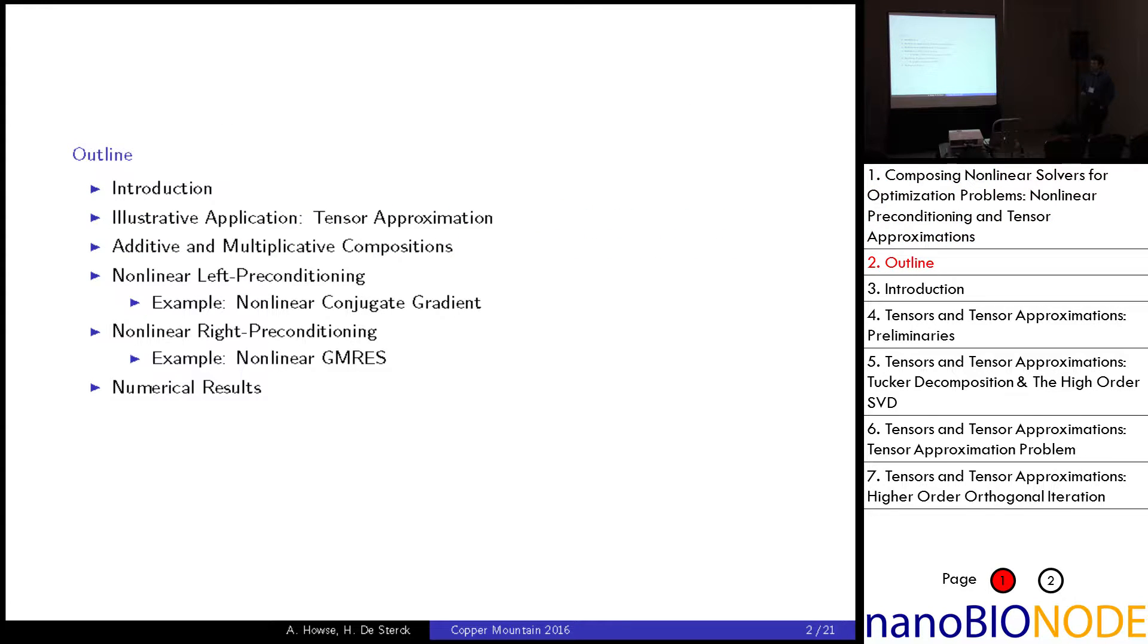So as a bit of a brief outline, there will be a short introduction on composing nonlinear solvers. I'll spend a fair bit of time developing the tensor approximation problem as this is what my research is focused on. Following that I'll be talking about the ideas of additive and multiplicative composition and then the idea of nonlinear preconditioning both left and right and illustrate this by using NCG and nonlinear GMRES. Then finally time permitting a brief numerical example.